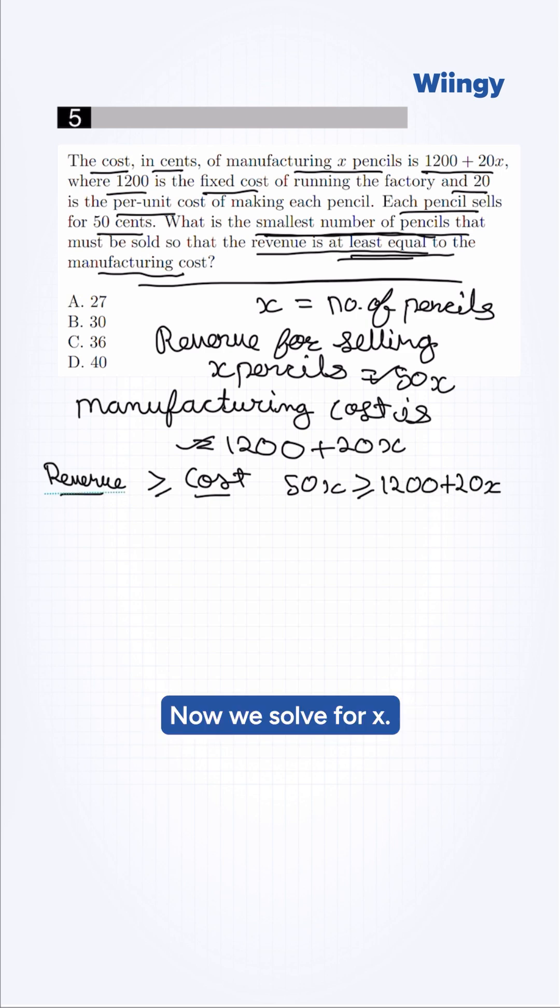Now we solve for X. This will be 50X minus 20X greater than or equal to 1,200. Simplifying this, we get 30X greater than or equal to 1,200.